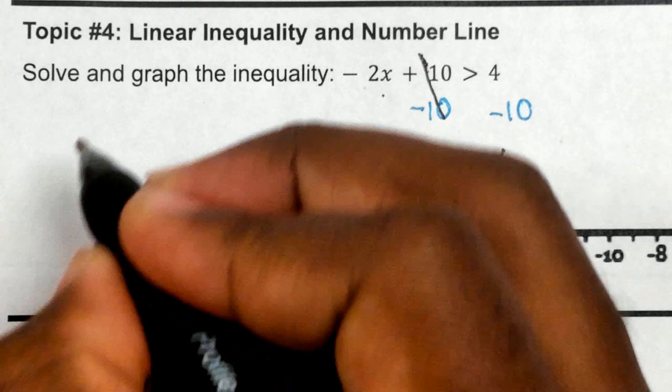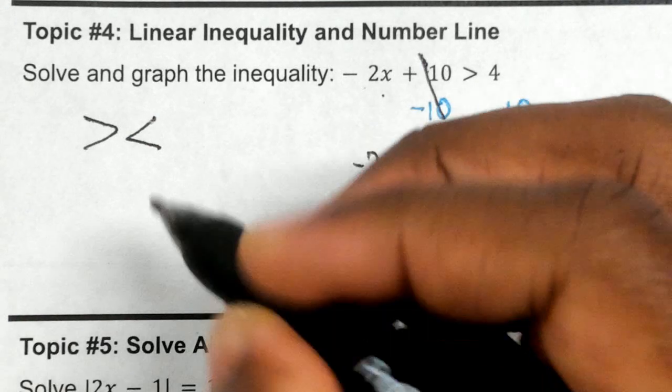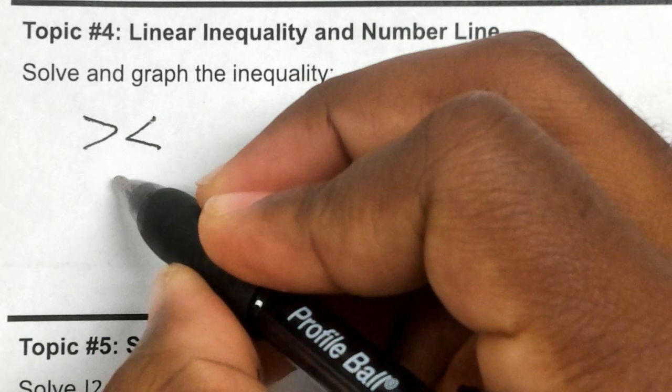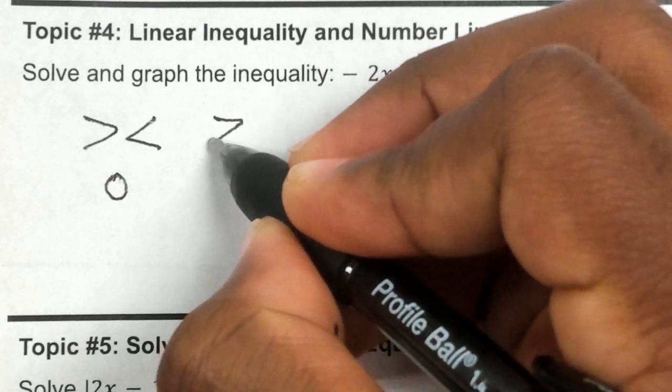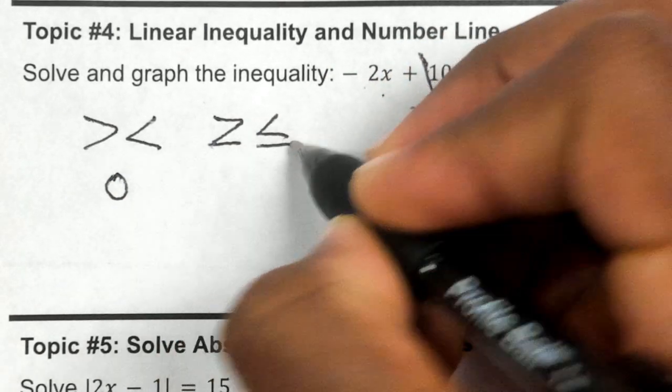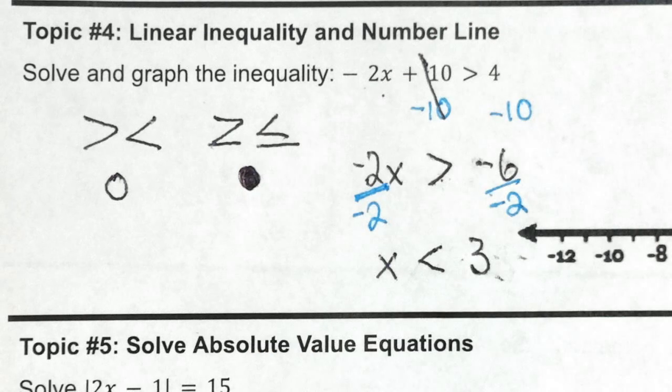Now we need to remember some things. Whenever we have a greater than or less than sign, when there's no line underneath, that means it's going to be an open circle. Whenever we have a greater than or equal to or less than or equal to, that means it's going to be a closed circle.